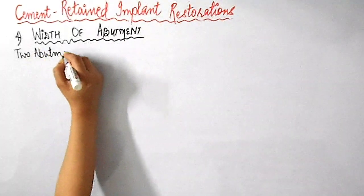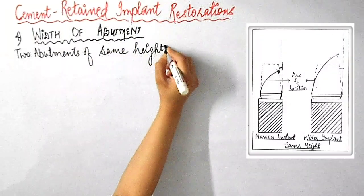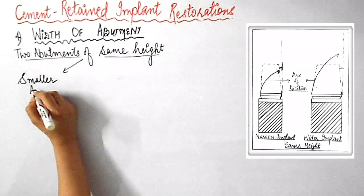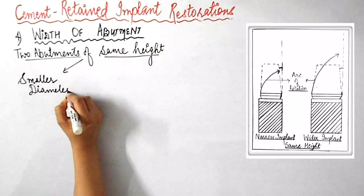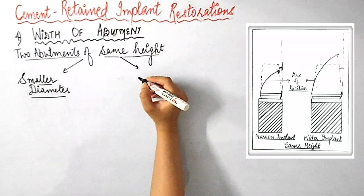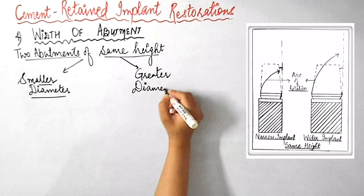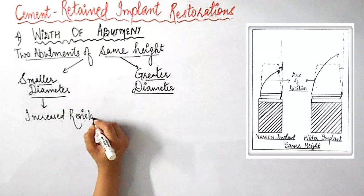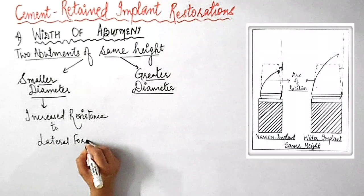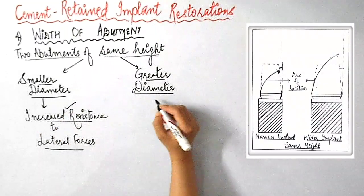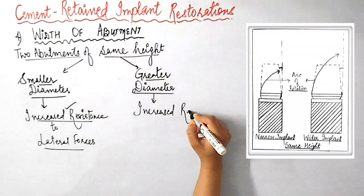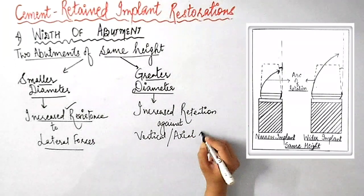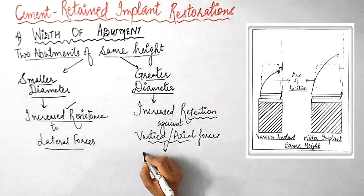The width of the abutment is another important factor influencing retention of cement retained implant restorations. When comparing two abutments of the same height — one with a smaller diameter and one with a greater diameter — the abutment with the smaller diameter has increased resistance to lateral forces, whereas the abutment with greater diameter provides increased retention against vertical or axial forces. This is due to the increased surface area available for bonding to the cement.